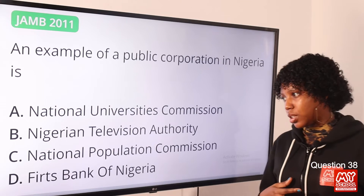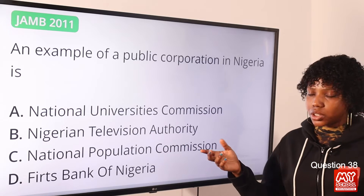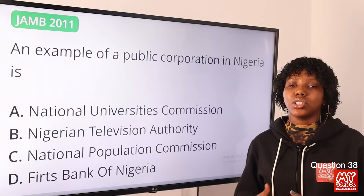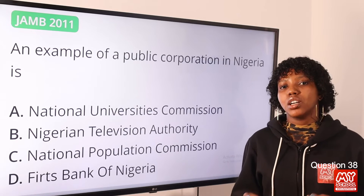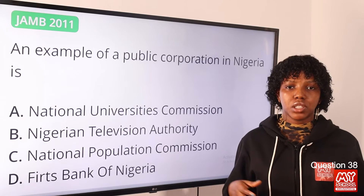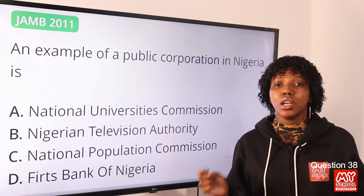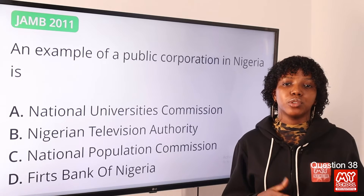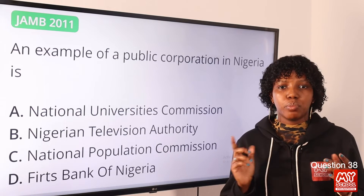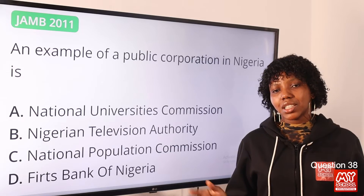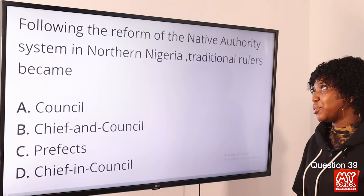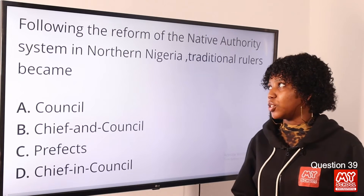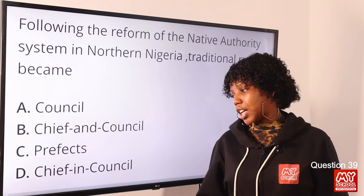Question 38: An example of a public corporation in Nigeria is — the answer is option B, the Nigerian Television Authority (NTA). Public corporations are government establishments or government enterprises. Other examples include PHCN, the Power Holding Company of Nigeria, and NNPC, the Nigerian National Petroleum Corporation. The answer is option B.